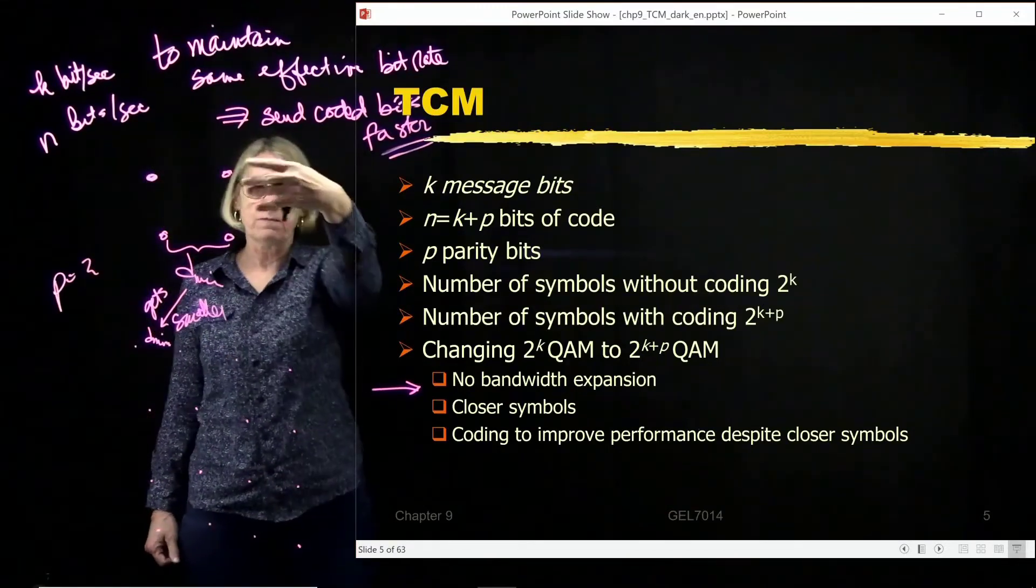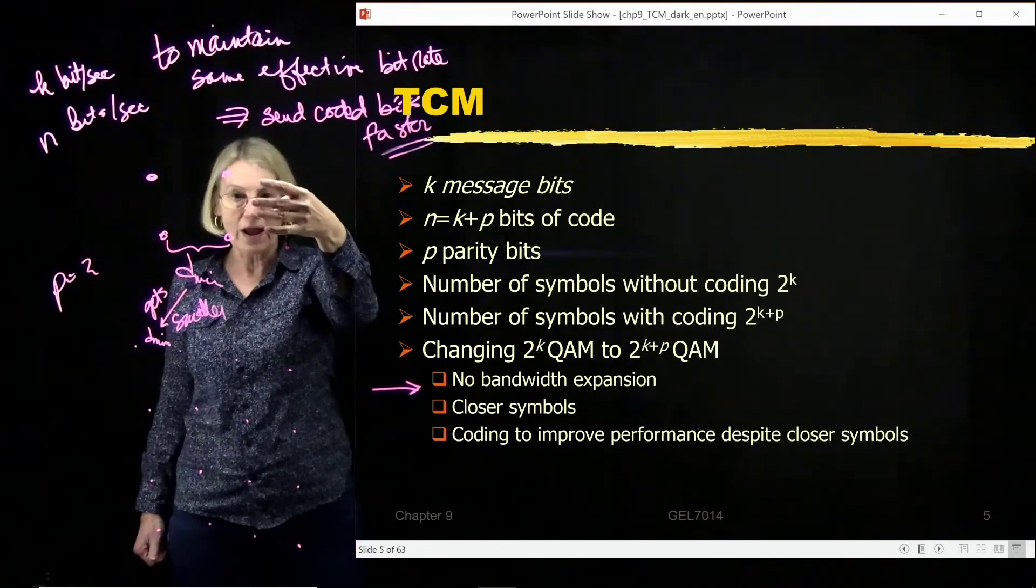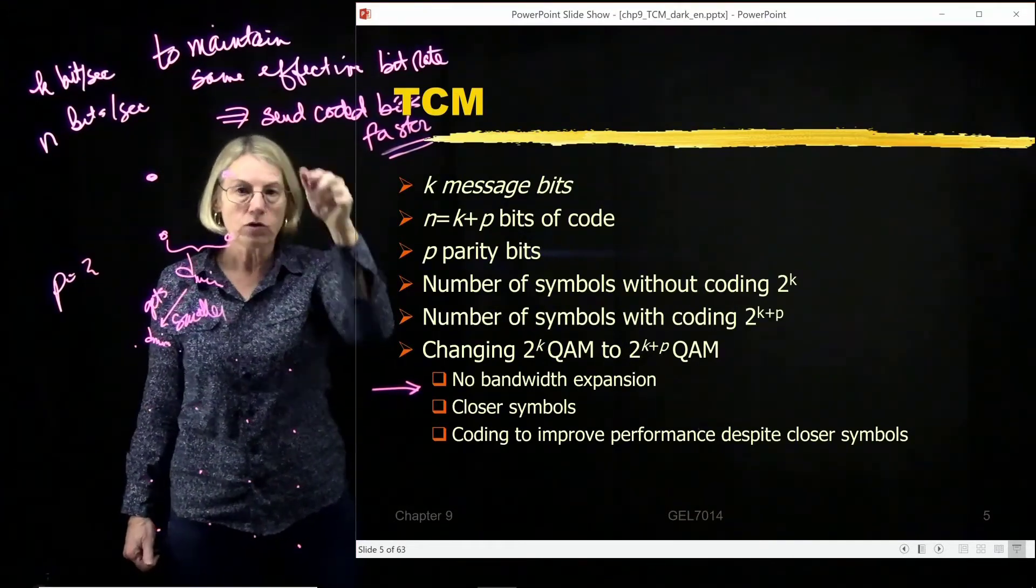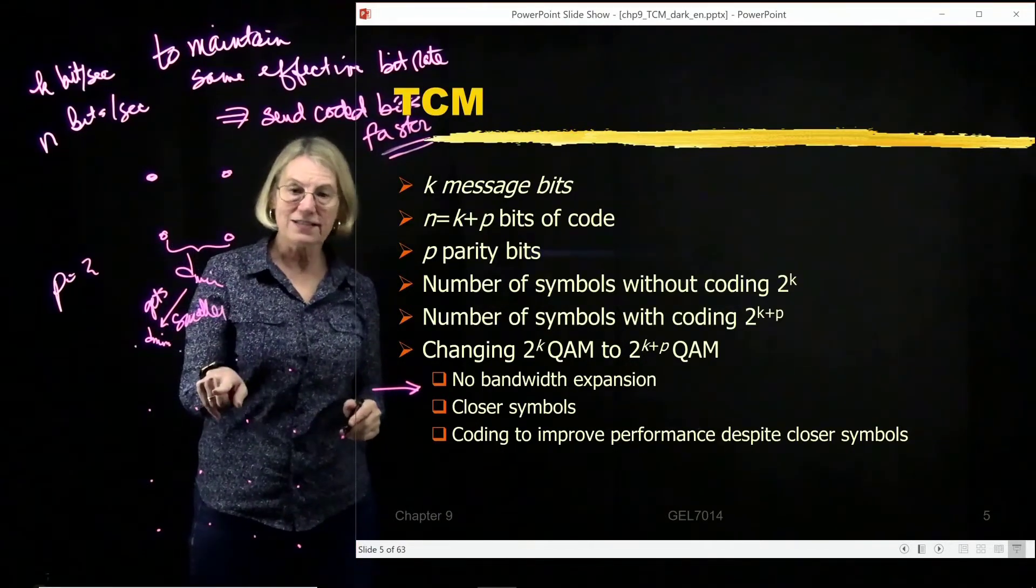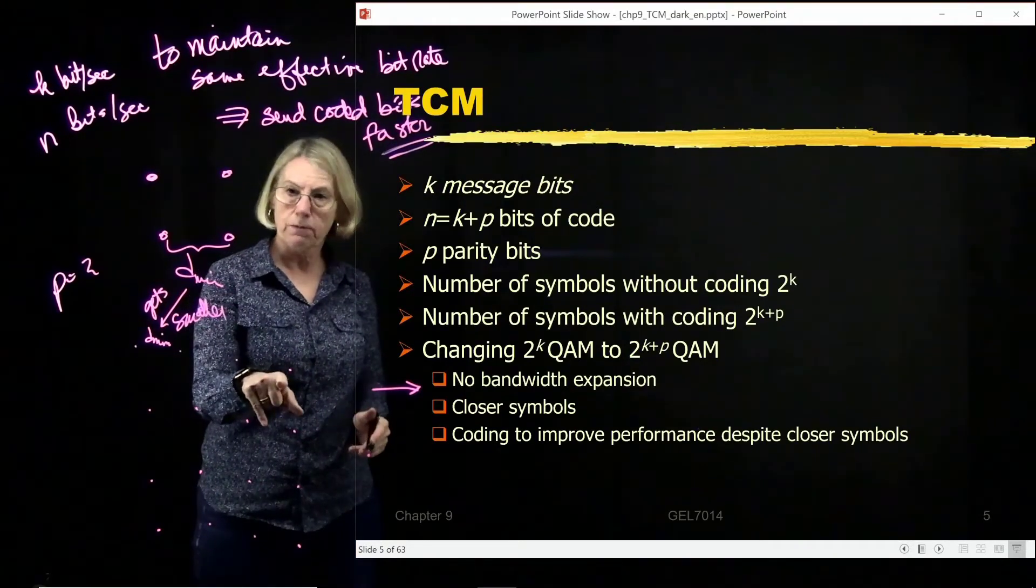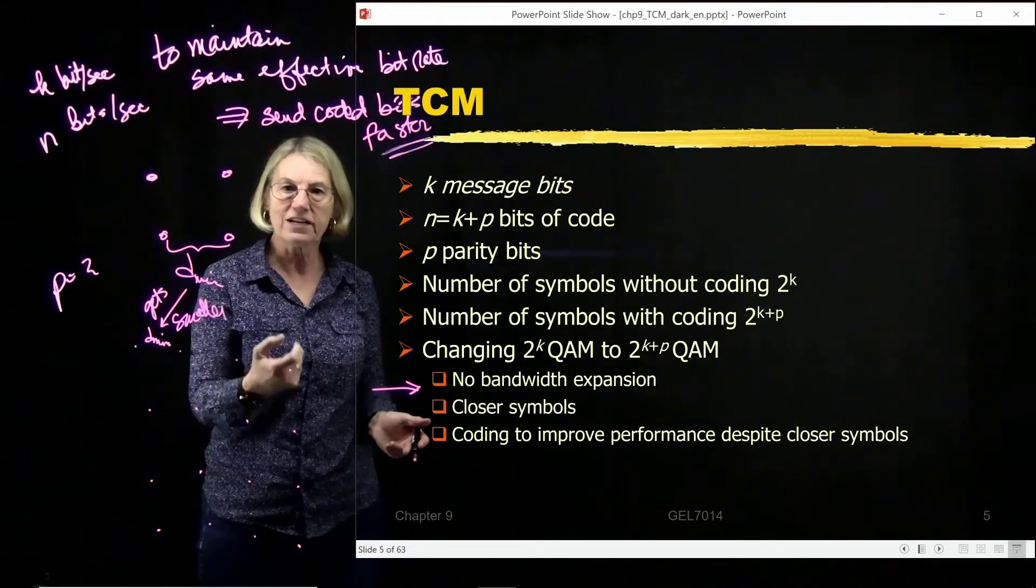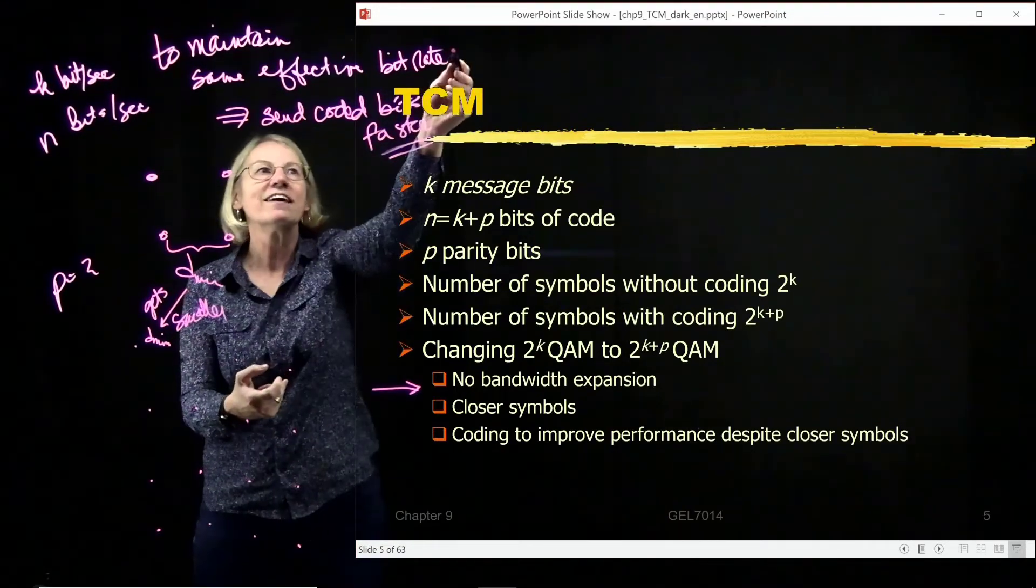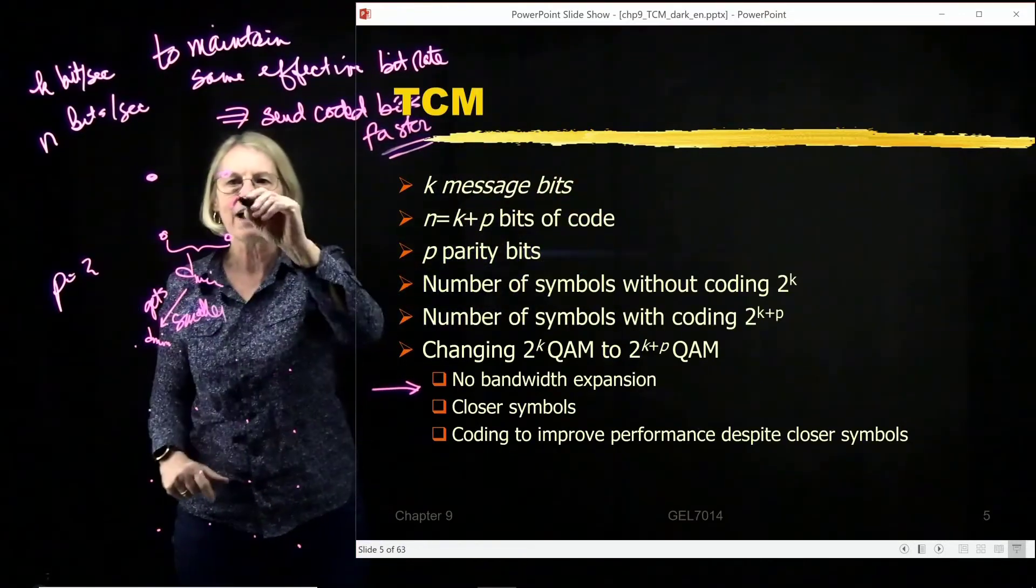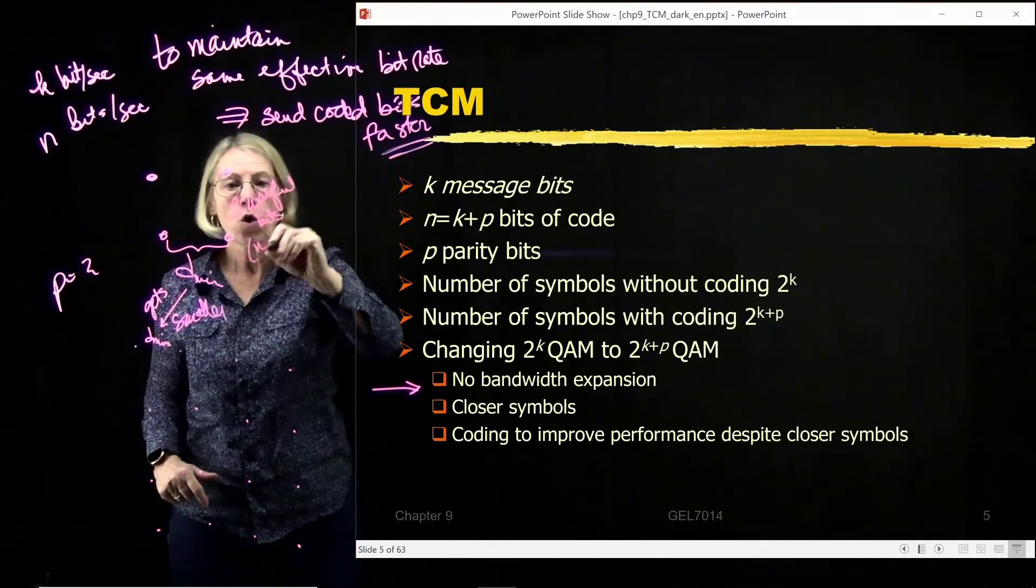So if I have p equal 2, and I go from QPSK to 16 QAM, then I'm sending at the same bit rate. Because here, when I was sending at this bit rate, there were only 2 bits per symbol. Now I'm sending at the same bit rate, same bandwidth. Now I have 4 bits per symbol, but 2 of them are redundancy bits. 2 of them are parity bits. And so they don't really contribute to making a faster bit rate. So here the bit rate is the same, because I have 2 useful bits.